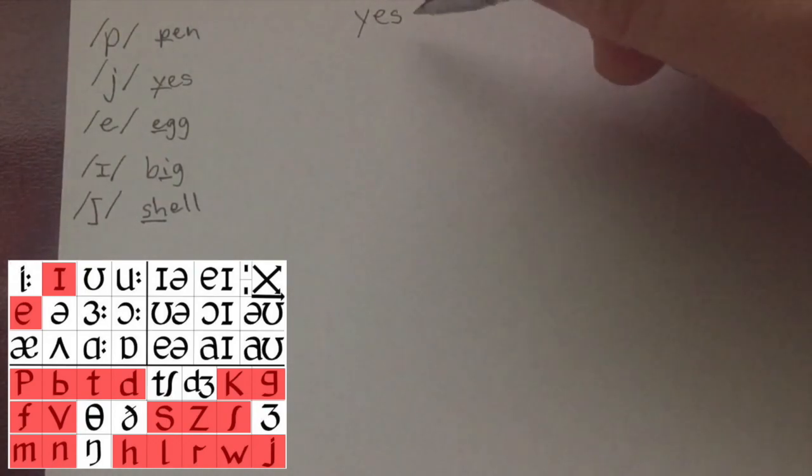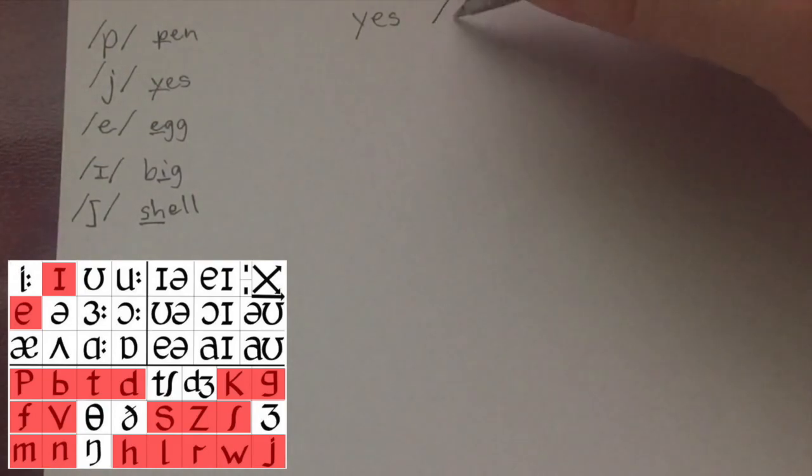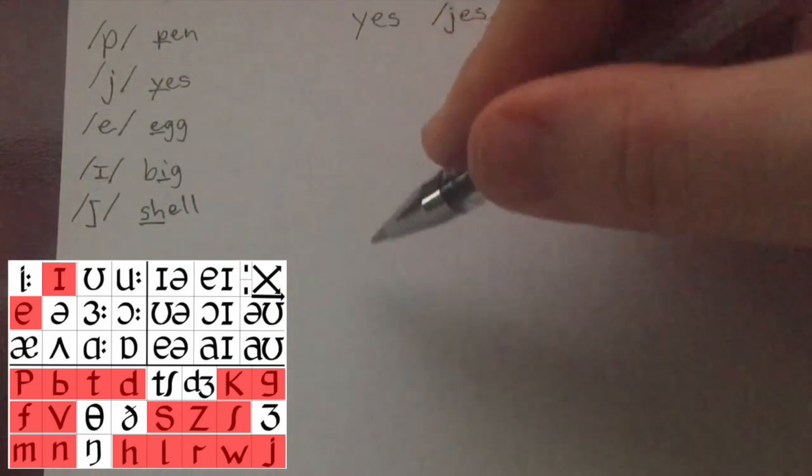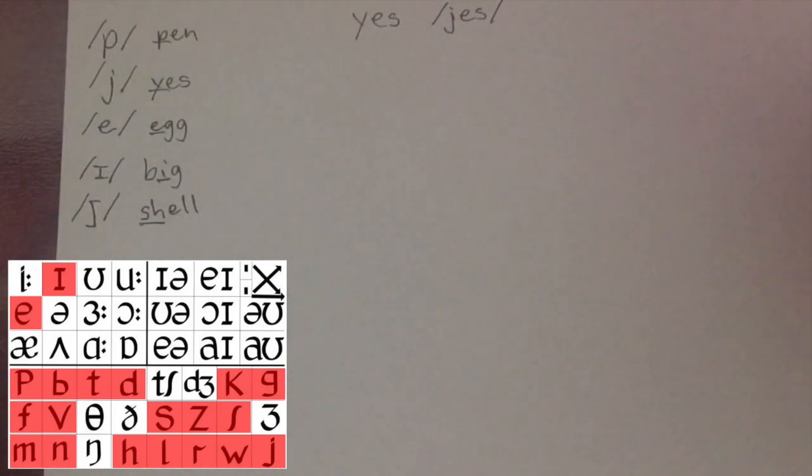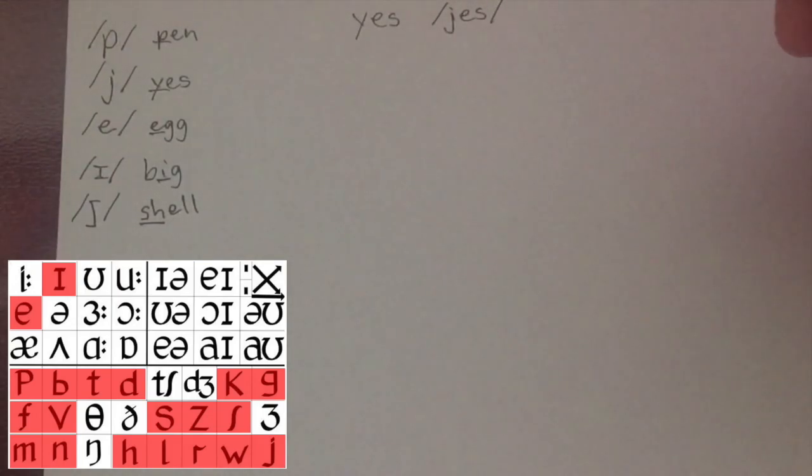And then next to it you write the phonemic script, for example, yes. And I'll pause a bit, and then you should write the phonemic script next to it, which would be yes.